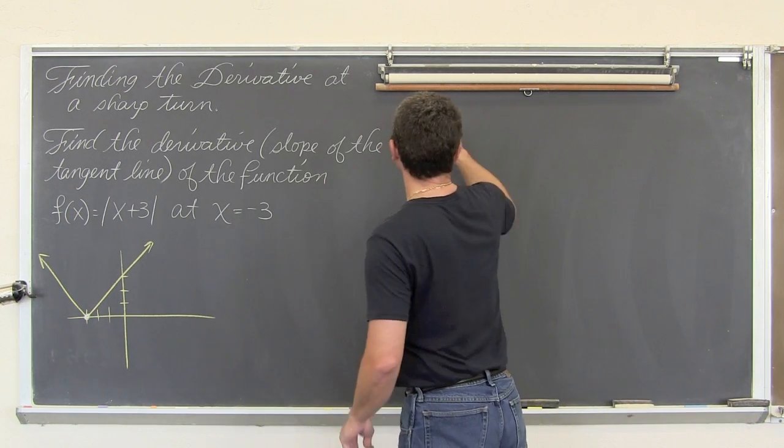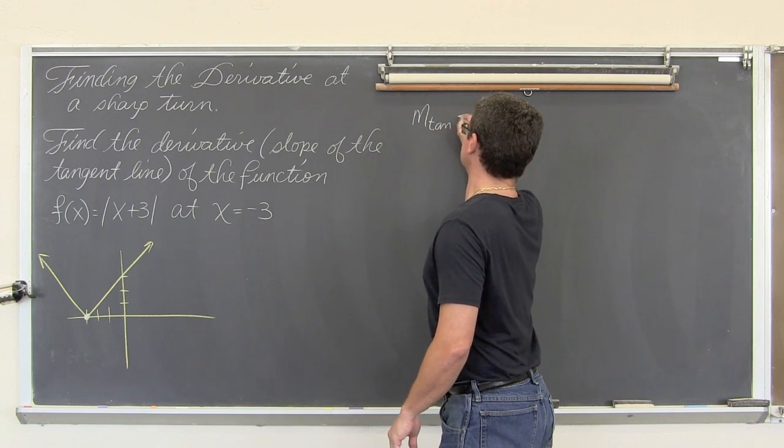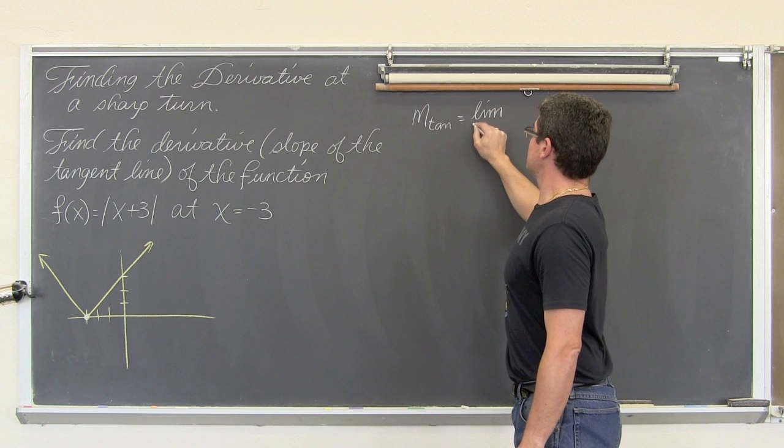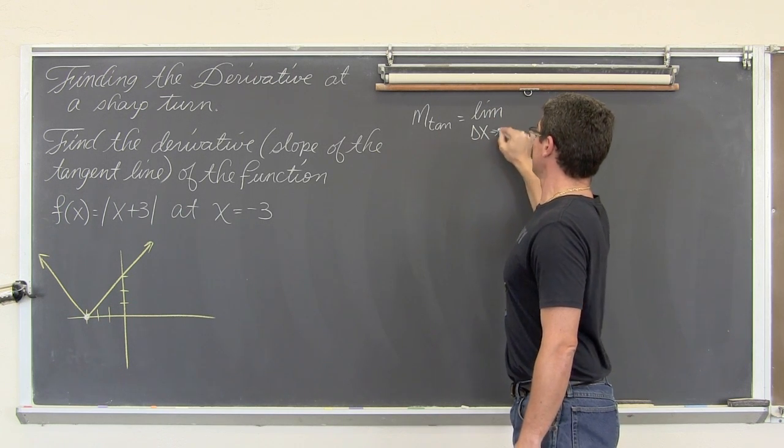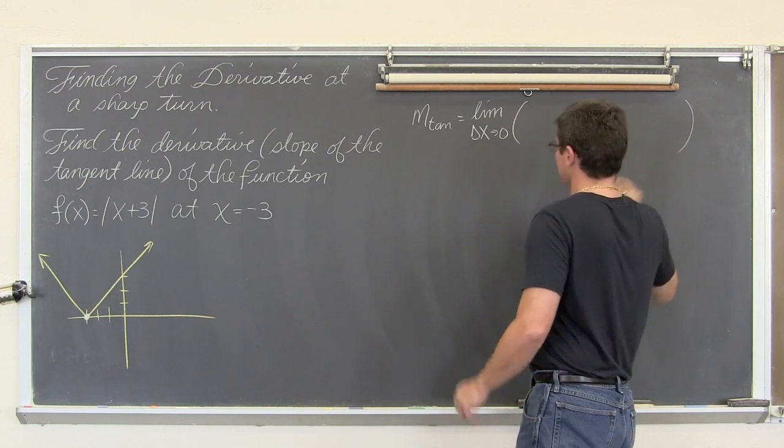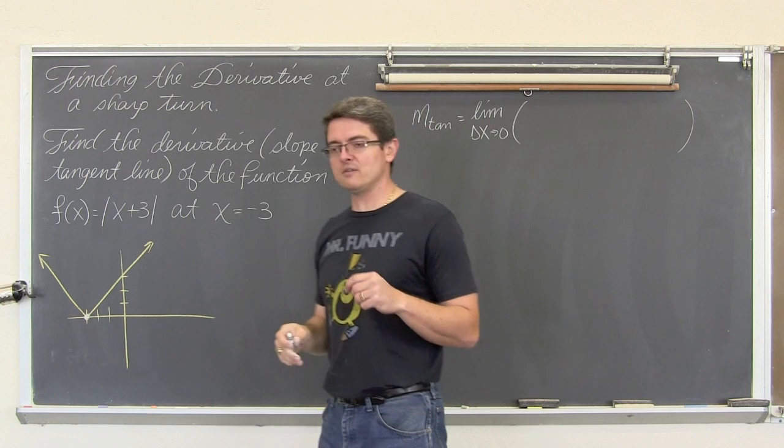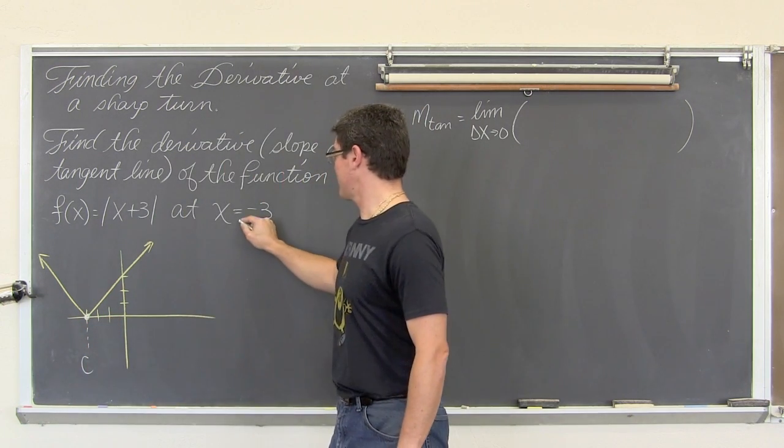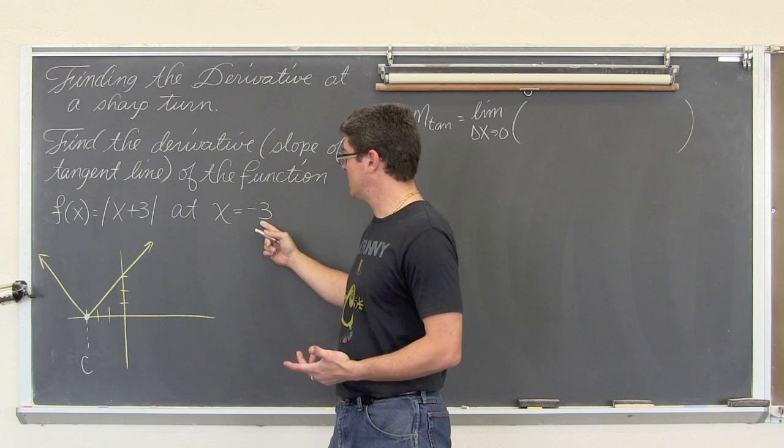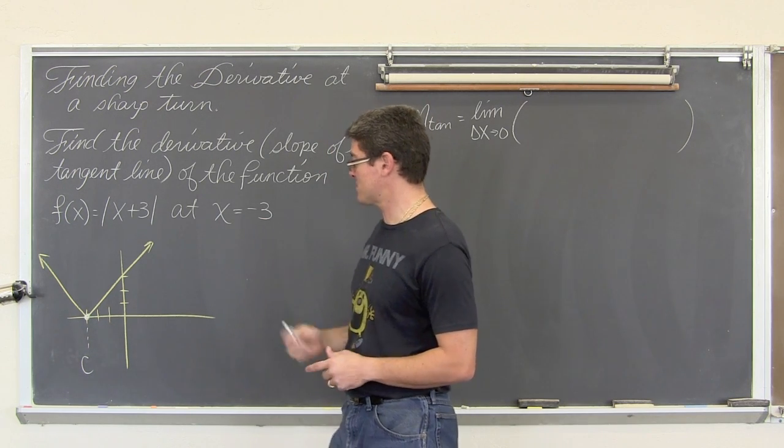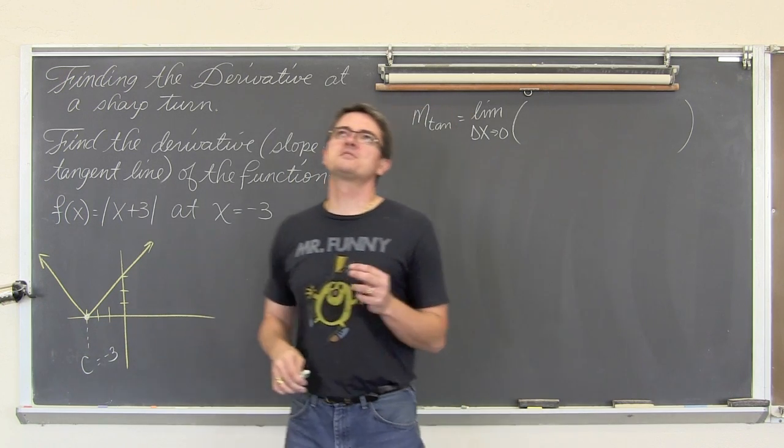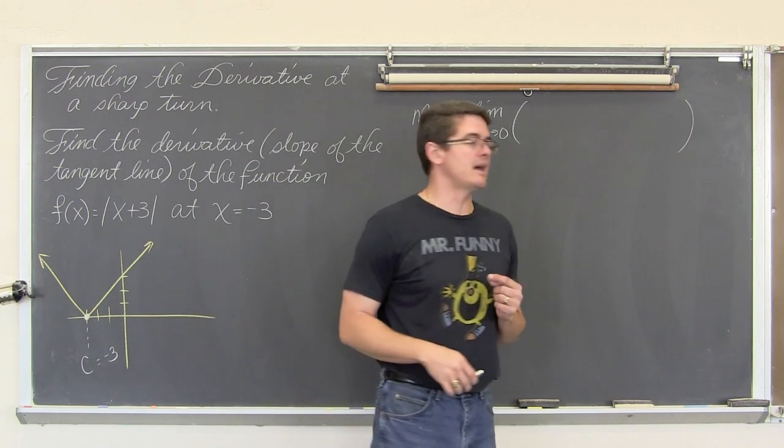So, the limit, the slope of the tangent line, the derivative, is equal to the limit as Δx approaches zero of f(c). So this is our value. We are finding the slope at negative 3, so c is going to be equal to negative 3, so it was f(c + Δx).